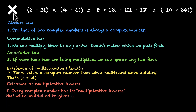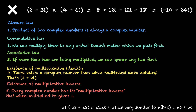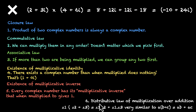Combining addition and multiplication gives one new law. For three complex numbers, z1×(z2+z3) equals z1·z2 + z1·z3. This is very similar to a×(b+c)=ab+ac in real numbers, and it is called the distributive law of multiplication over addition.